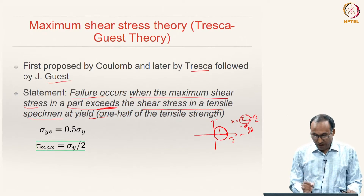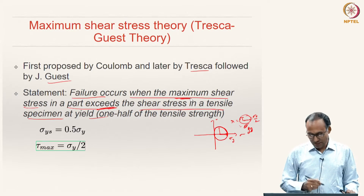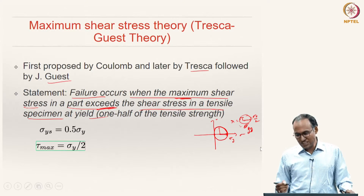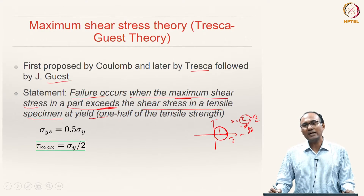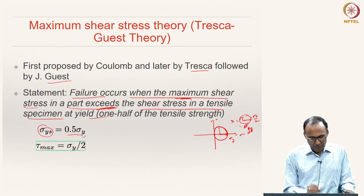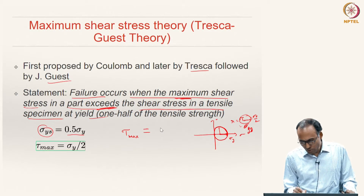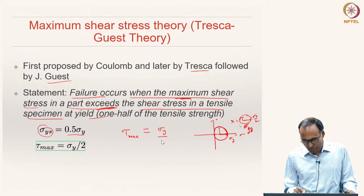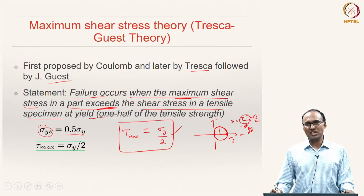What we are saying is that failure occurs in a material when the maximum shear stress induced in the material exceeds the shear yield strength under the uniaxial tension test — that means when it exceeds 0.5 times sigma_y. We calculate the maximum shear stress in the material; if that equals sigma_y by 2 (the shear yield strength), that is when failure happens. That is our maximum shear stress theory statement.